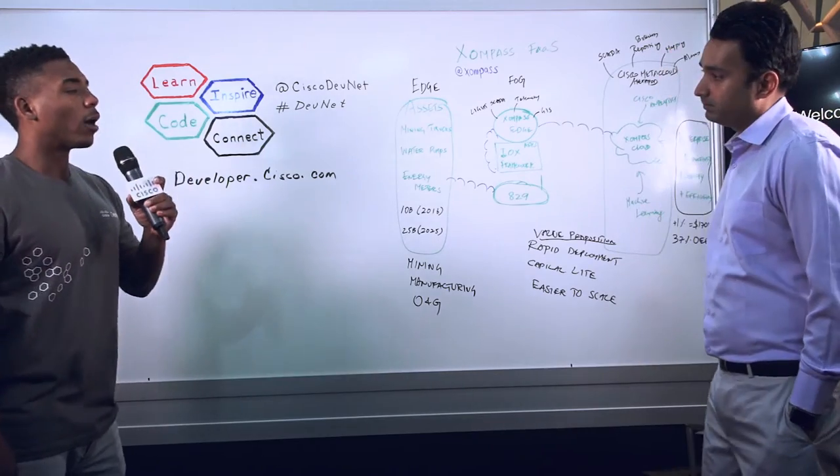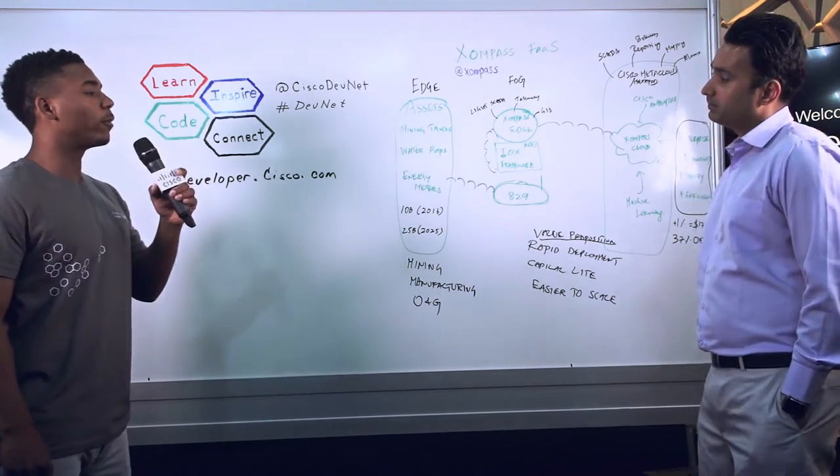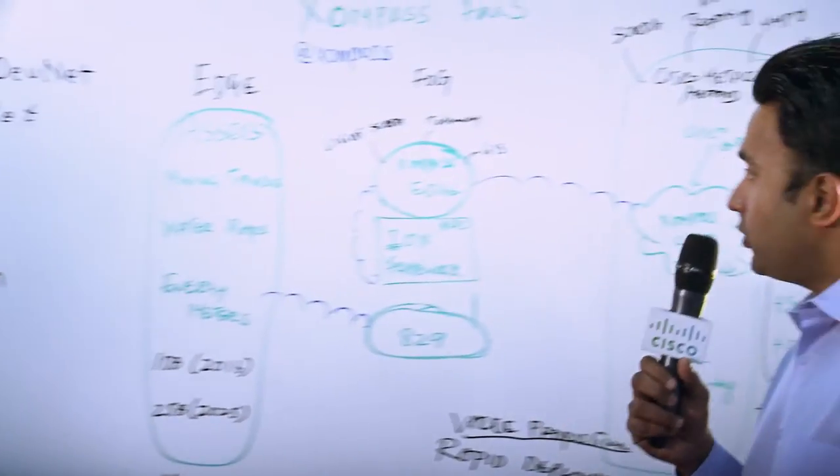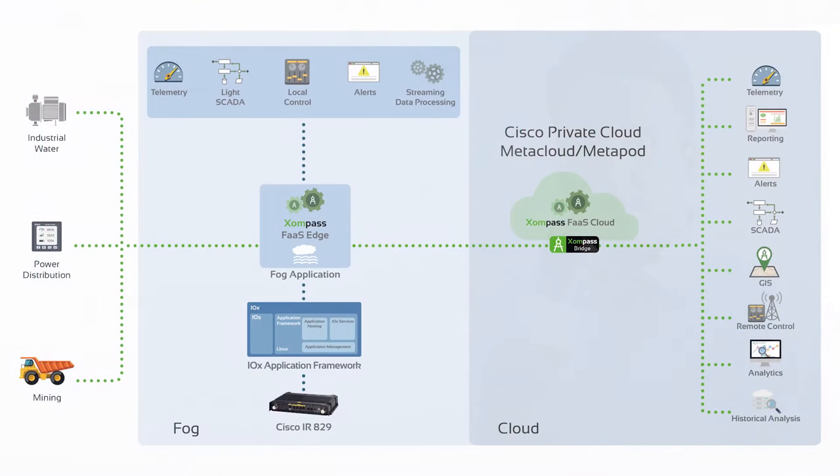So could you describe a little bit more Field Intelligence as a Service and how that connects with SCADA and a lot of these other technologies? Absolutely, Jordan. Field Intelligence as a Service, Compass has a platform called FaaS, F-A-A-S, Field Intelligence as a Service. We see that by connecting to assets easily, we can actually offer tremendous benefit.